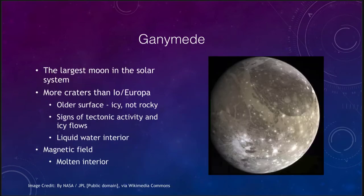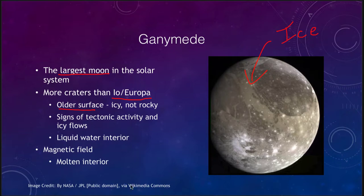As we work our way out, we see Ganymede — the largest moon in the solar system. It is significantly more cratered than Io or Europa, so it has an older surface. When we look at it, we are again looking at ice — everything on the surface is ice. There are signs of possible tectonic activity and ice flows due to tidal interactions with Jupiter, and Ganymede, like Europa, has a liquid water interior. So we know of a couple more places where liquid water is present in the solar system.